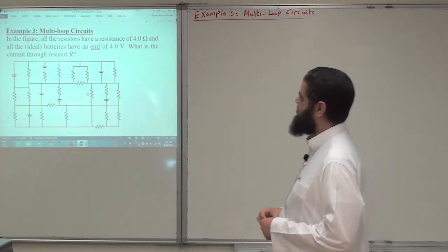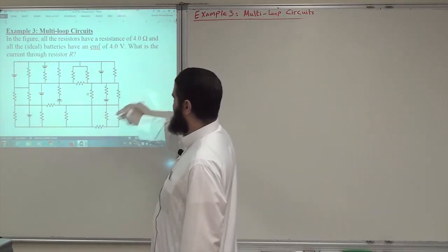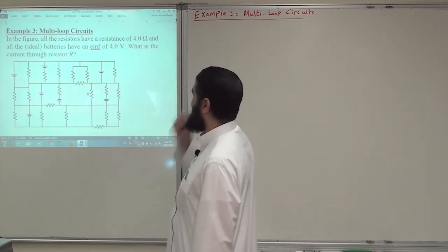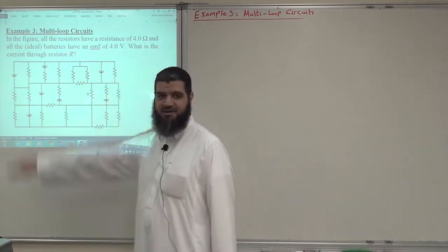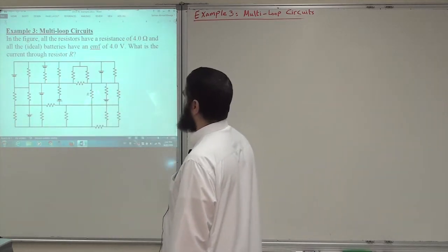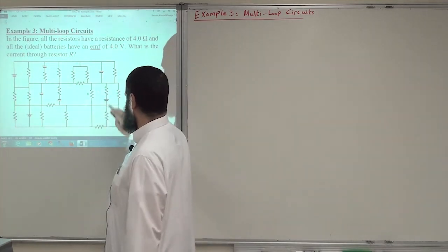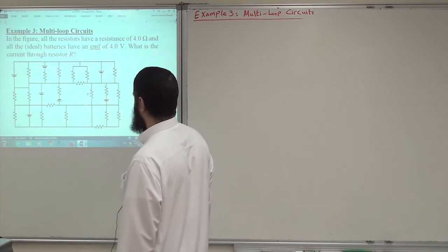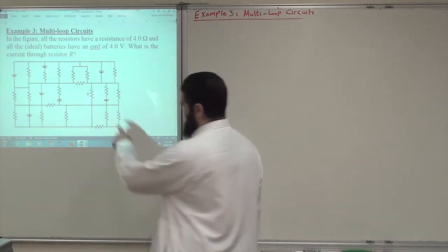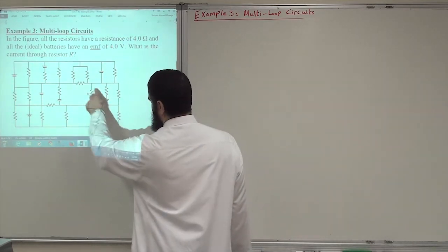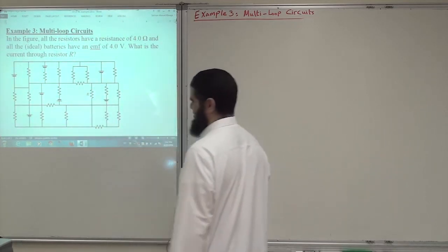This is the last example on multi-loop circuits. In the figure, which might look very complicated but is not, all the resistors have a resistance of 4 ohms, so all these resistors are identical. All batteries are ideal with no internal resistance and they have an EMF of 4 volts. What is the current through the resistance R?